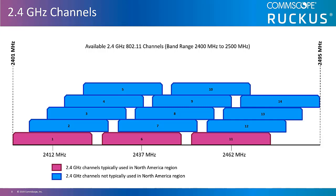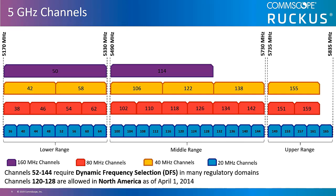The channels listed as 'not typically used' are non-recommended channels considered to be overlapping. In some cases they may be used, but such scenarios are rare. Most implementations in 2.4 GHz use a simple three-channel plan of 1, 6, and 11 to avoid any overlapping channel interference.